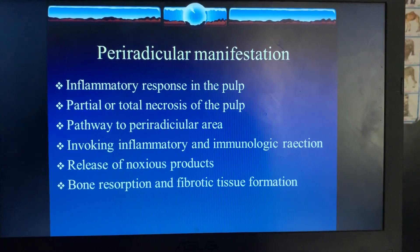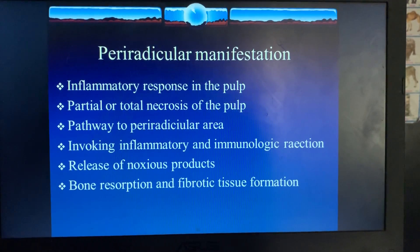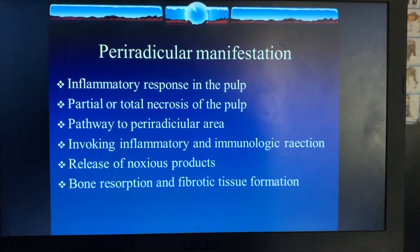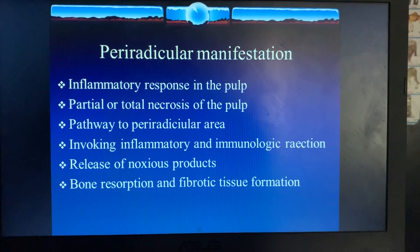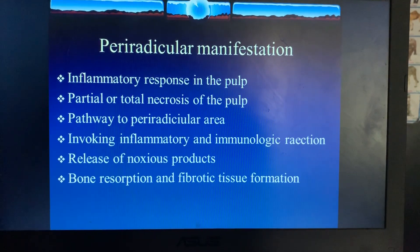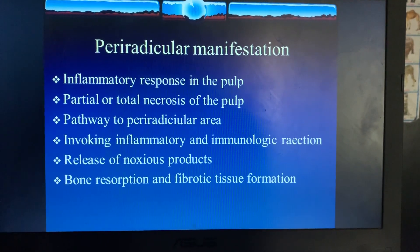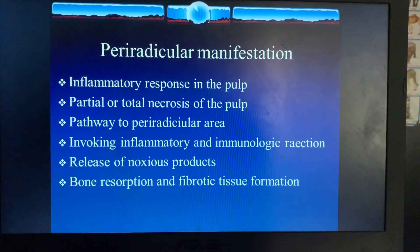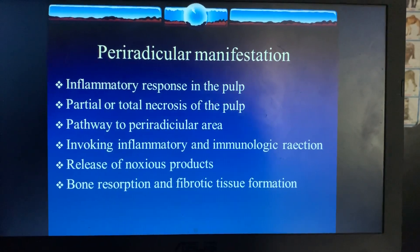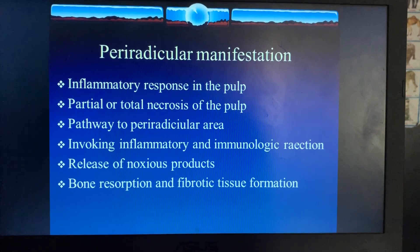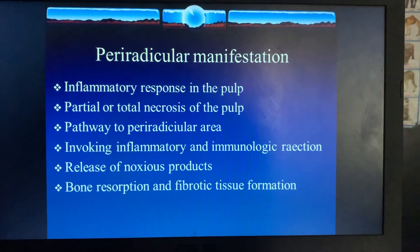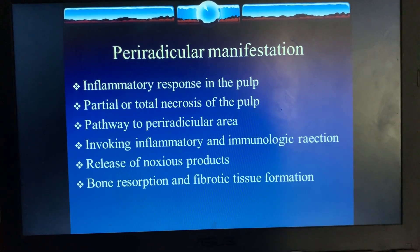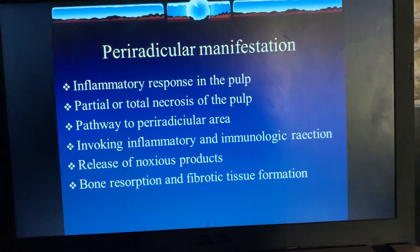The inflammatory response starts in the pulp, leading to partial or total necrosis of pulp in the root canal. The root canal becomes a pathway to the periradicular area, evoking inflammatory and immunological reactions there. This reaction leads to a release of noxious products from bacteria and cells, causing bone resorption, which is later replaced by granulation tissue.